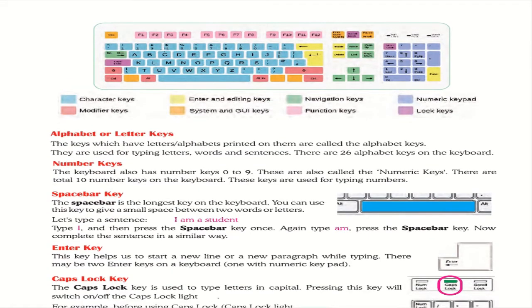Looking at the keyboard: these are the function keys and modifier keys, then lock keys, then Print Screen, Pause, Insert, Delete. This is the Enter key, this is the Backspace key, these are the character keys and number keys, and these are the arrow buttons. This is the Shift key, this is Control, this is Alt, and this is the Windows key.